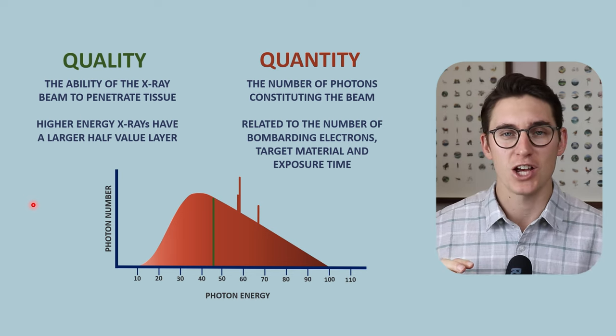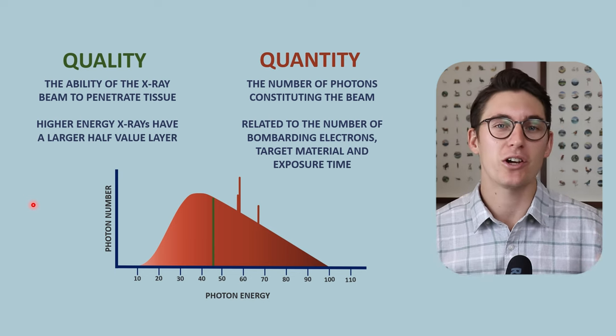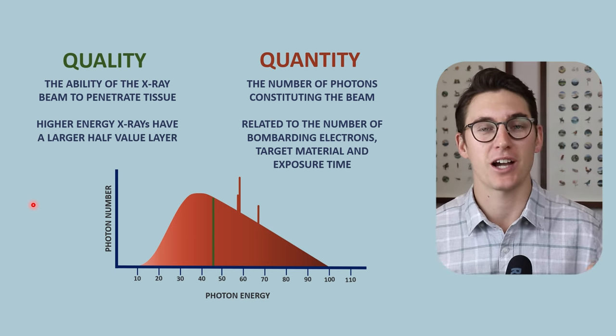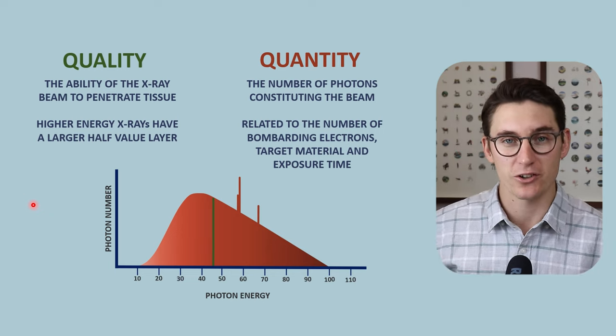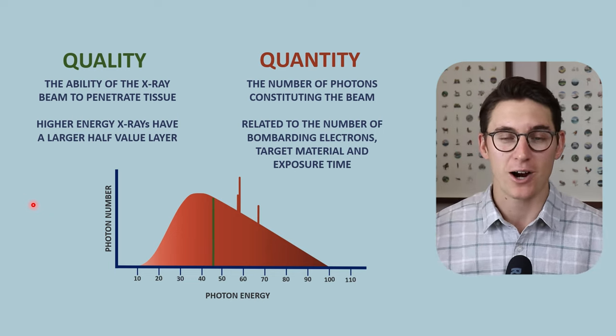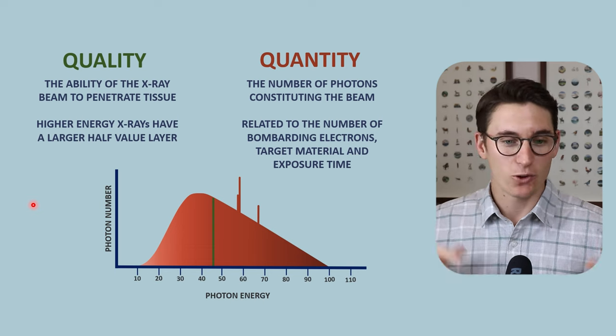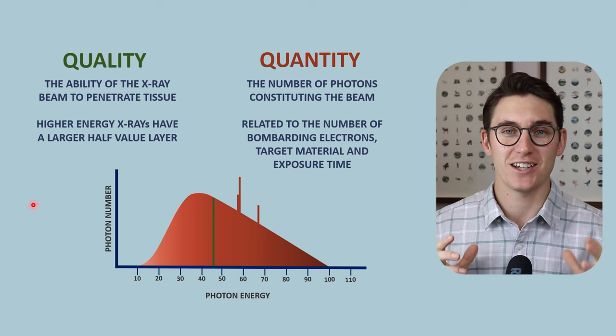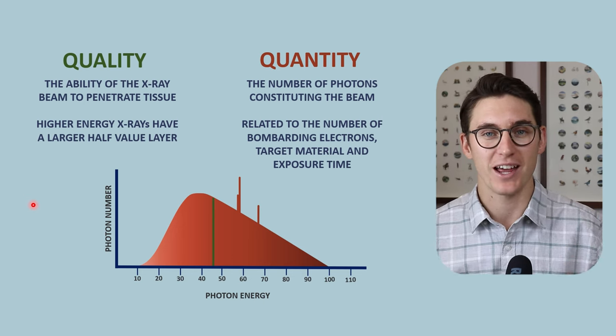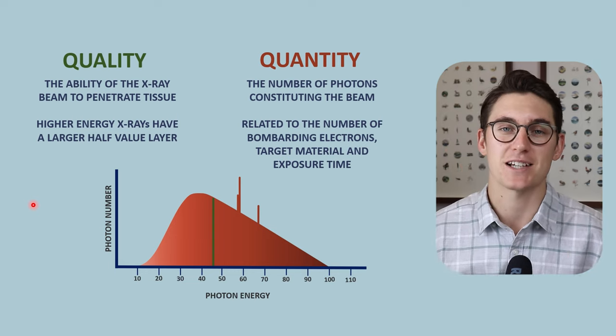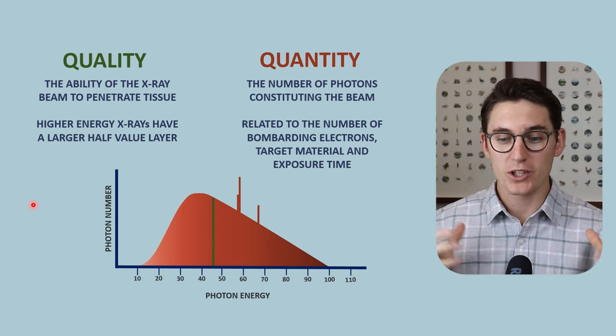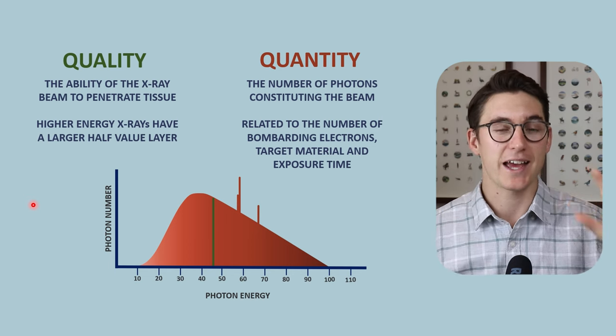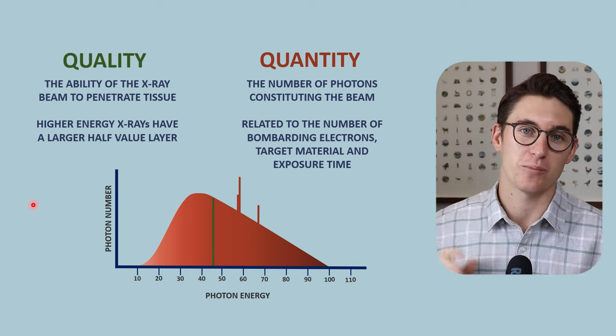Before we get into these, we can manipulate multiple factors when we are creating X-rays. We can manipulate our KVP, our filament current and exposure time. We can change the target material or the type of waveform that is powering our X-ray machine. All of these changes will have an impact on our X-ray spectrum. This is a common question in exams - it comes up over and over again. How does manipulating one of those factors affect our X-ray spectrum? When we talk about how it affects the X-ray spectrum, we generally talk about it in two different ways: X-ray beam quality and X-ray beam quantity.